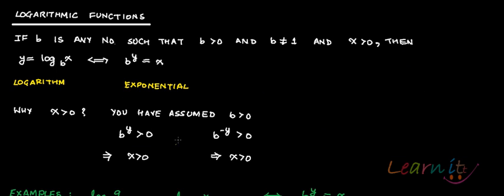Now, in the case of a logarithmic function, if b is any number such that b is greater than 0 and b is not equal to 1, and x is greater than 0, then y equals log of x to the base b is equivalent to b to the power y equals x. These are equivalent statements — this is the logarithmic function and this is the exponential function.